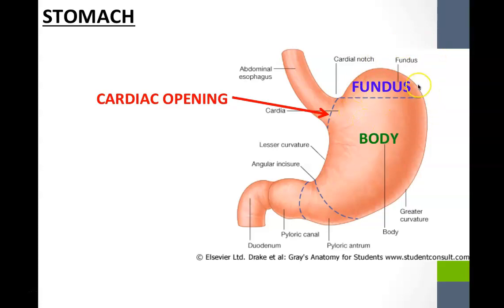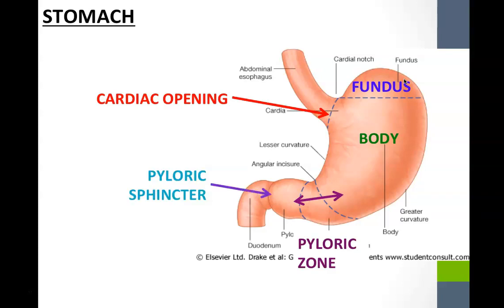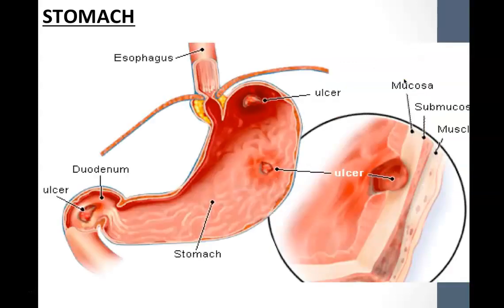The main mass of the stomach is called the body, and the inferior portion is known as the pyloric zone. The word pylorus means gatekeeper, because we have a muscle called the pyloric sphincter. When it contracts, it closes off the stomach from the intestines; when it relaxes, it allows stomach contents to move into the first part of the small intestines.